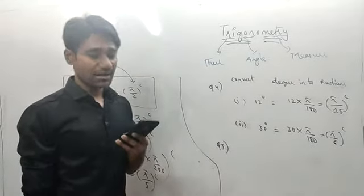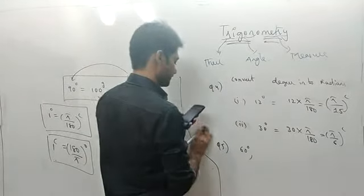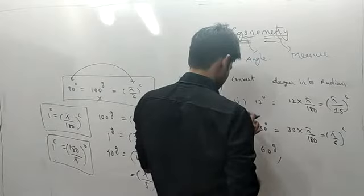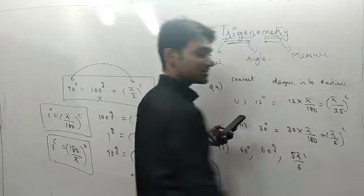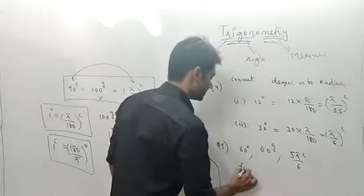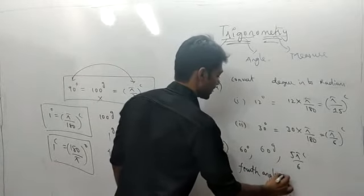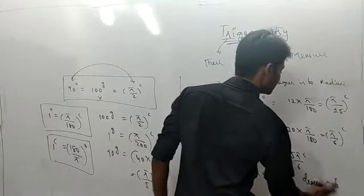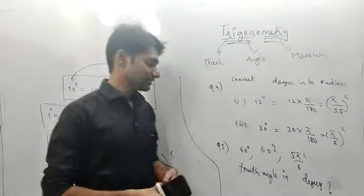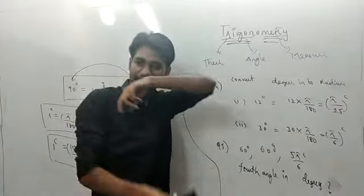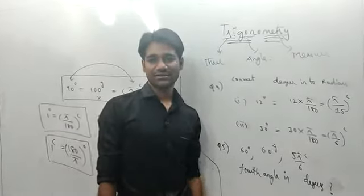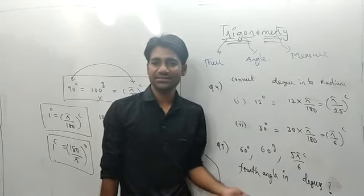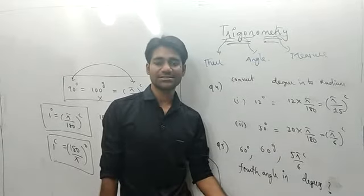Another question: if 3 angles of a quadrilateral are 60 degrees, 60 grades, and 5π/6 radians, find the 4th angle in degree scale. Using the angle sum property, the sum of 4 angles of a quadrilateral is 360 degrees. Convert all angles to degrees and subtract from 360.